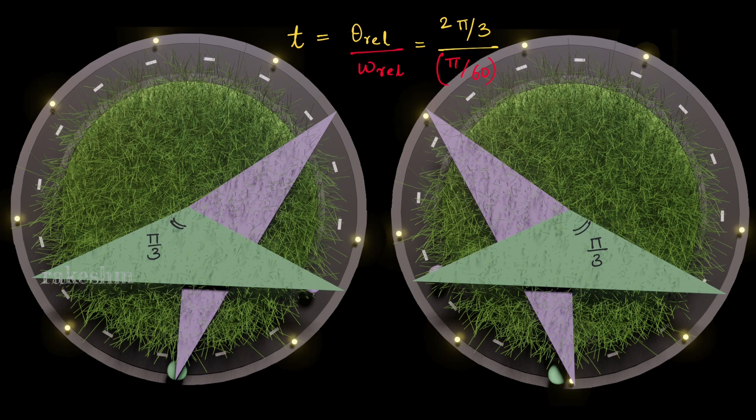So the time for which both see each other is theta relative divided by omega relative. Theta relative is 2 pi by 3 and the omega relative is pi by 60. So if we simplify this, we get t equal to 40 seconds.